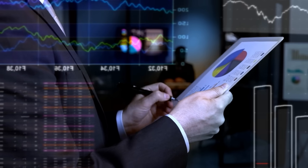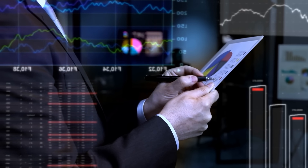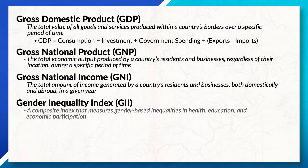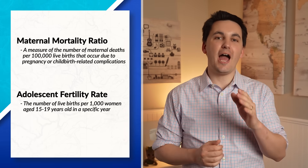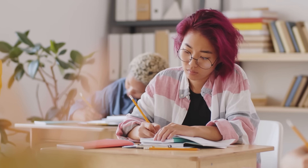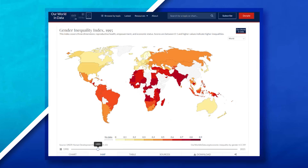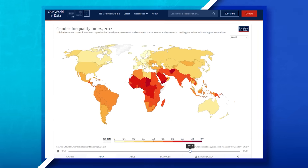Now, so far we've been looking at ways to measure economic development, but we can also measure a country's social development. One way is by looking at a country's GII, which is the Gender Inequality Index. This index shows inequality between women and men in three different areas: reproductive health, empowerment, and the labor market. Reproductive health is measured by the maternal mortality ratio and the adolescent fertility rate. Empowerment is measured by the amount of government positions held by each gender and the amount of secondary and higher education levels obtained by each gender. Lastly, the labor market is measured by women's participation in the workforce. A country's GII can range between zero and one, with higher values indicating more inequalities. A score of zero would mean perfect equality, though currently no countries in the world have a score of zero.